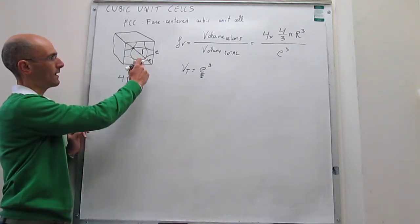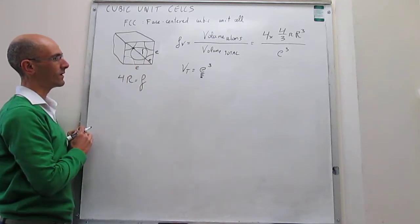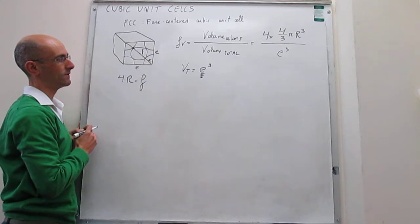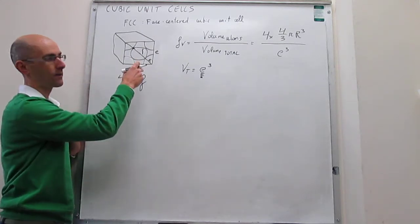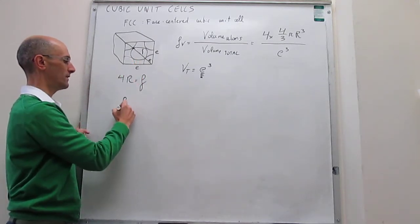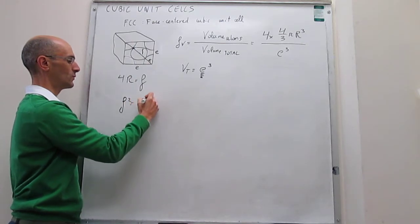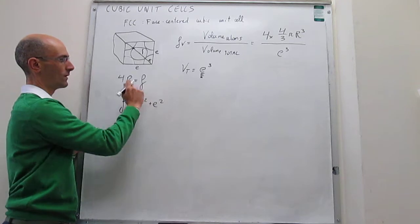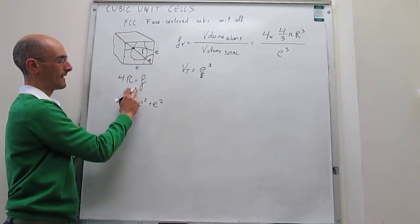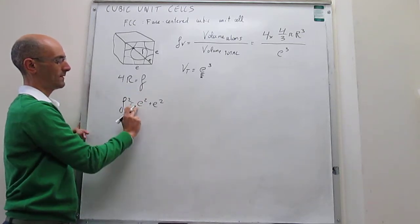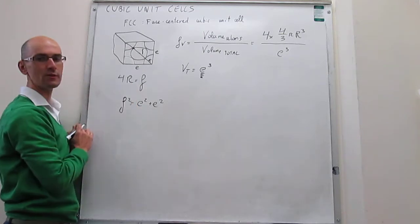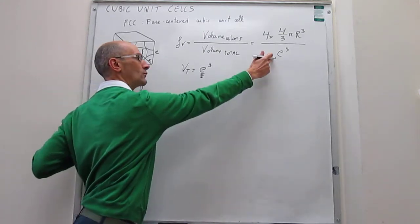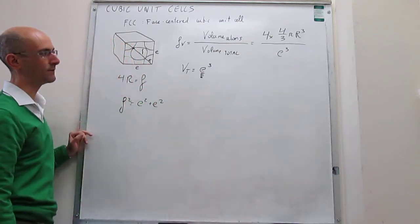And using the Pythagorean theorem, we can see that there is a relationship between this edge, what we want in the total volume of that unit cell, and the face diagonal. Notice that F squared has to be equal to E squared plus E squared. So from here, from these two relationships, we're going to be able to find what the edge is in terms of the radius of those atoms, and then we'll be able to replace it here and calculate what the packing efficiency would be.